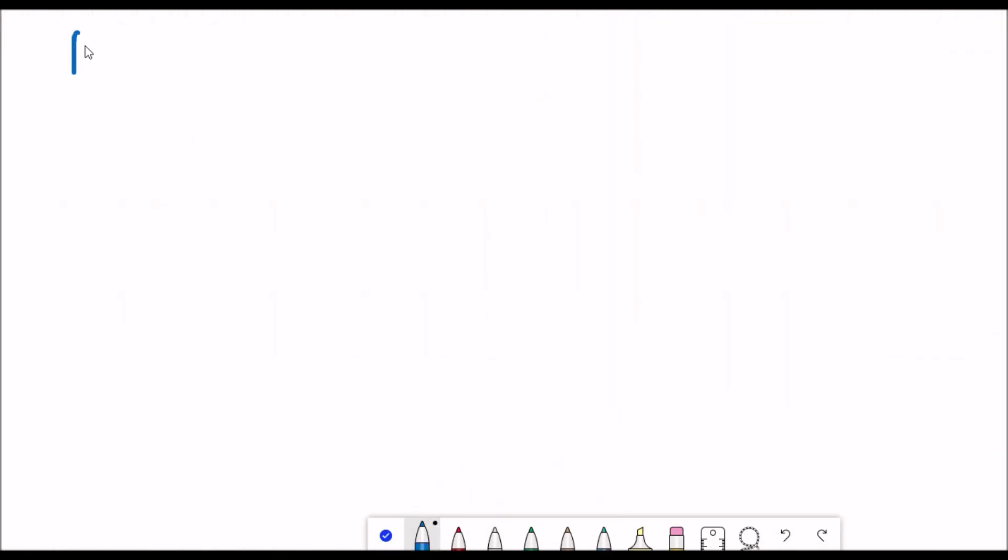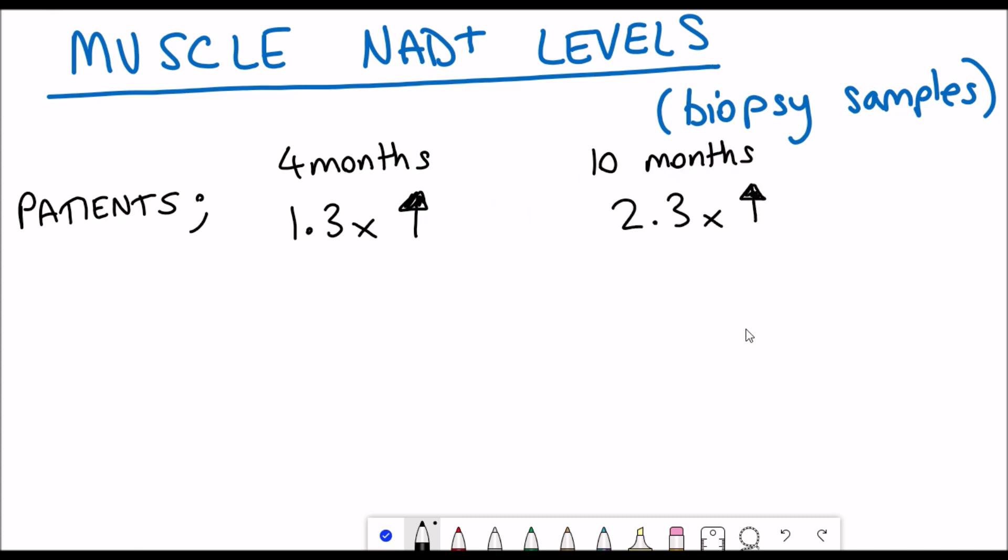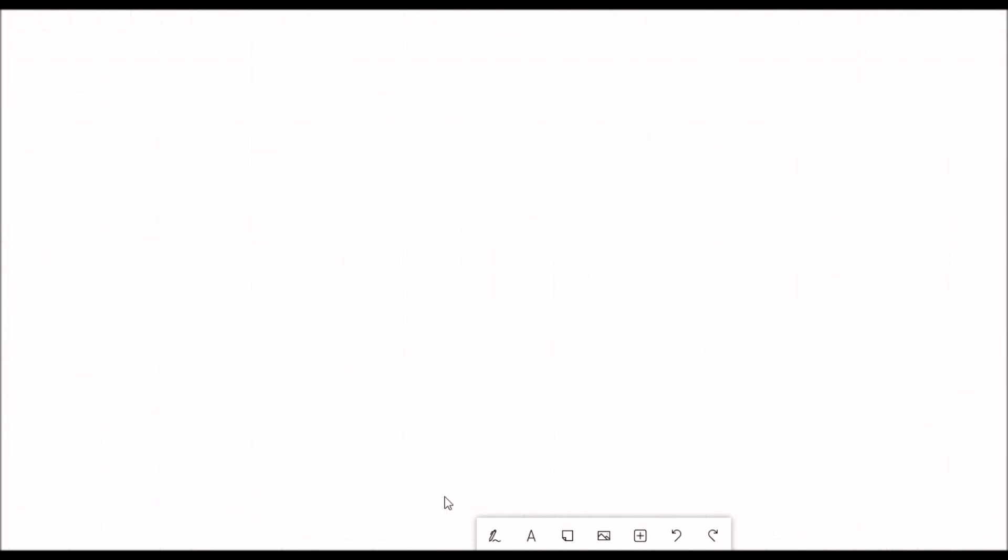The first thing they needed to check was whether or not having niacin actually increased the NAD Plus levels because that was the main rationale behind their methods. They looked at the NAD Plus levels in the muscle tissue and for this they took some biopsy samples. In the patients at four months and ten months they saw an increase in the muscle NAD Plus levels, a 1.3 fold and a 2.3 fold increase. By ten months this actually matched the healthy controls, which they didn't see an increase throughout the study, even by taking niacin.